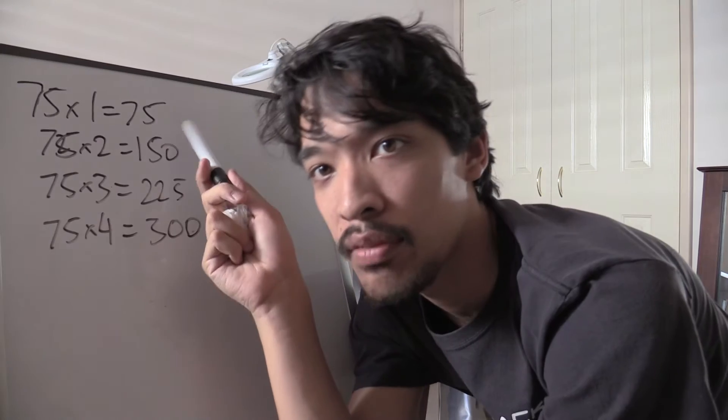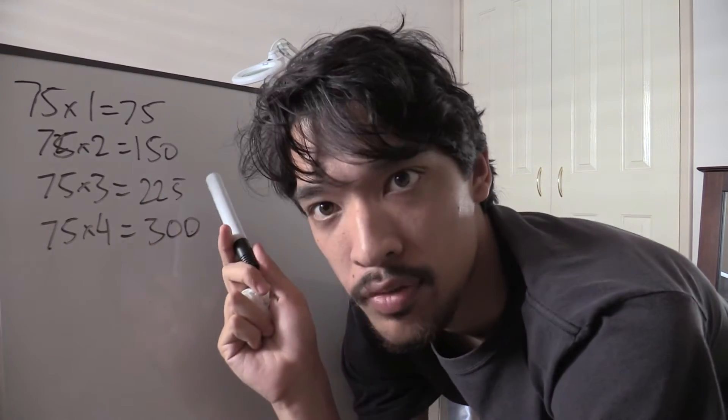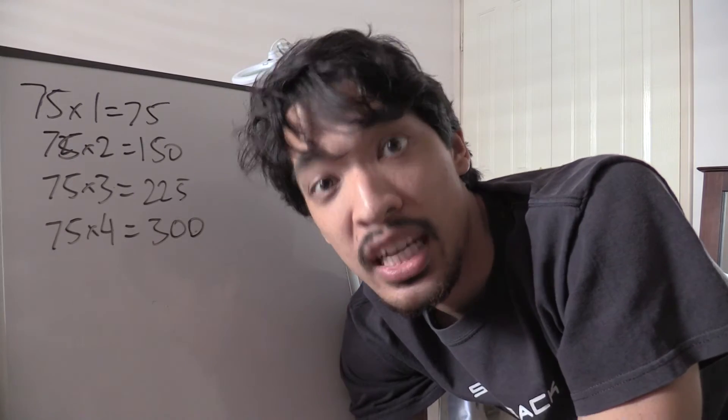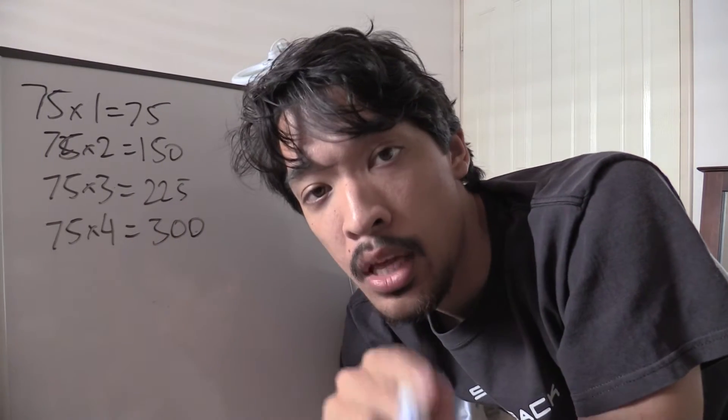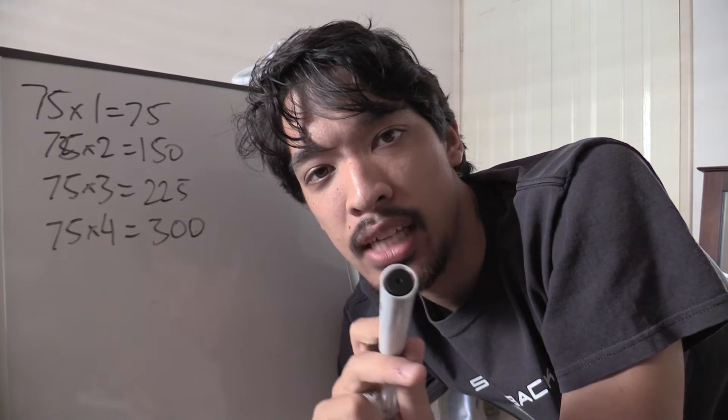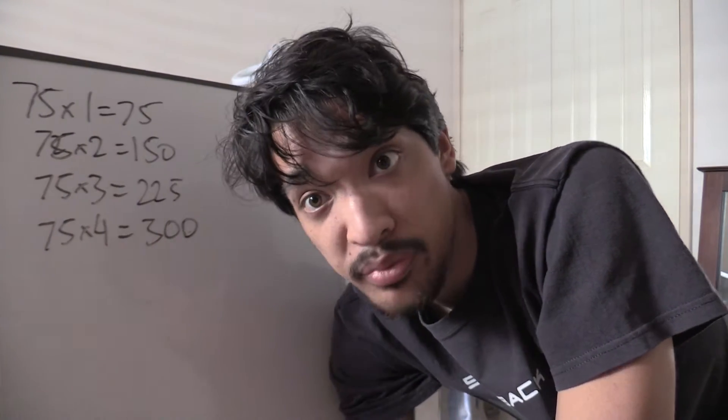You only need to know 75 times 1 which is 75, 75 times 2 which is 150, 75 times 3 which is 225, 75 times 4 is 300, and your 4 times table which I hope all of you know, as well as your 300 times table, which is just like your 3 times table except slightly larger.